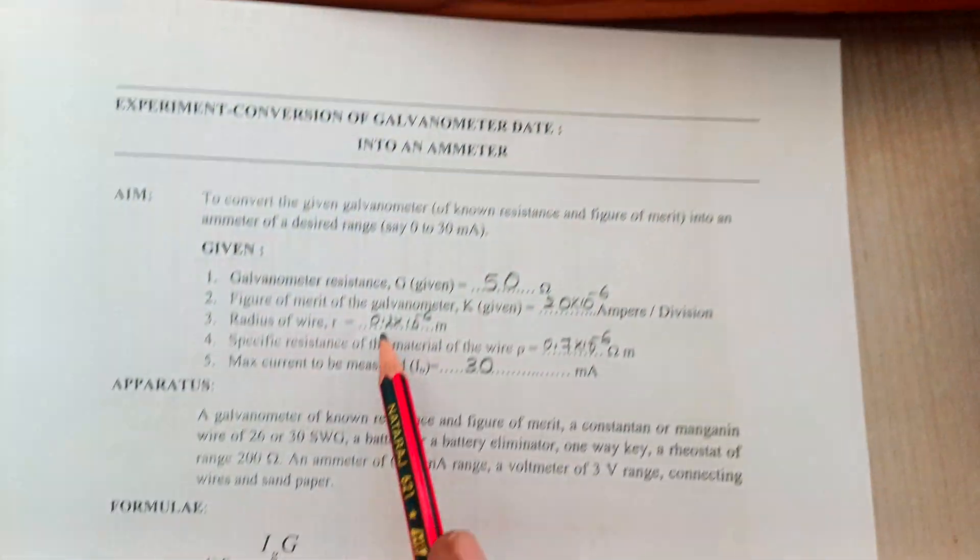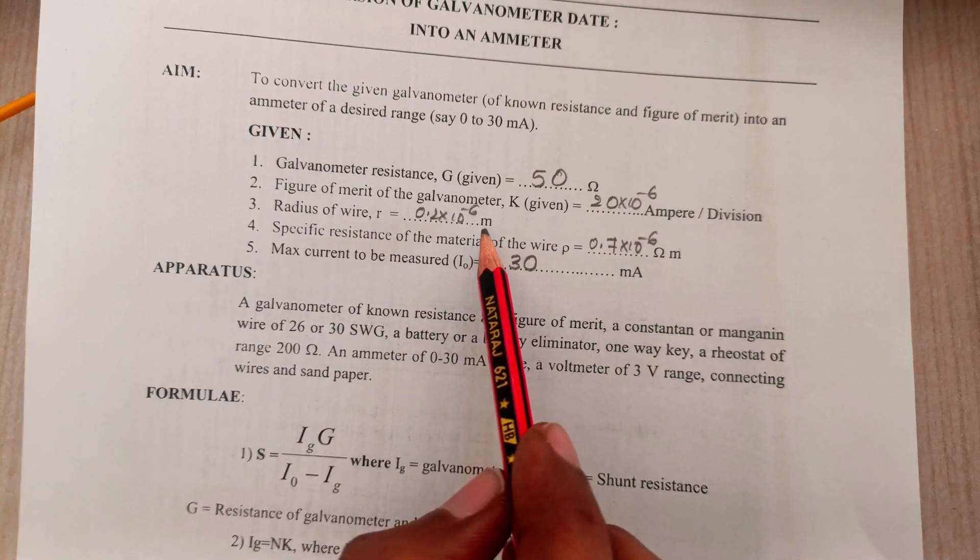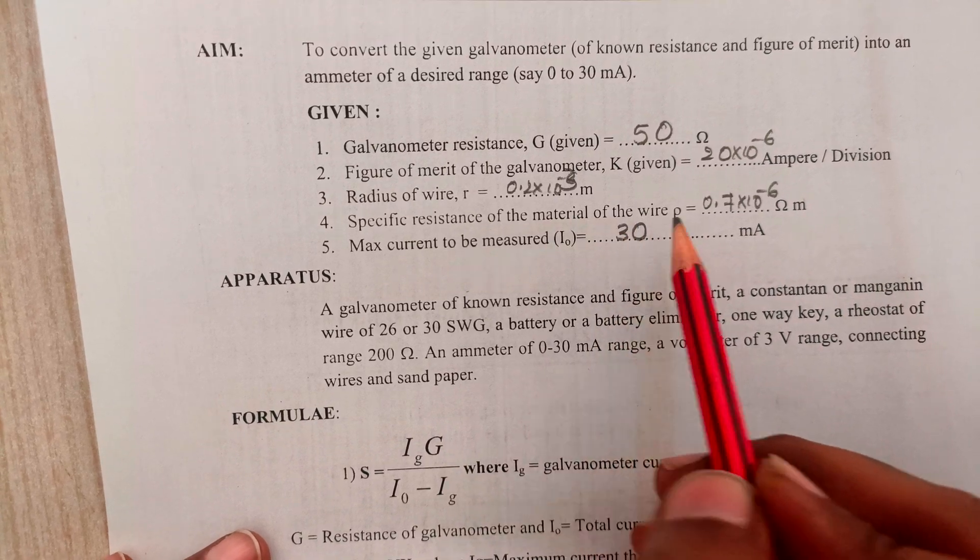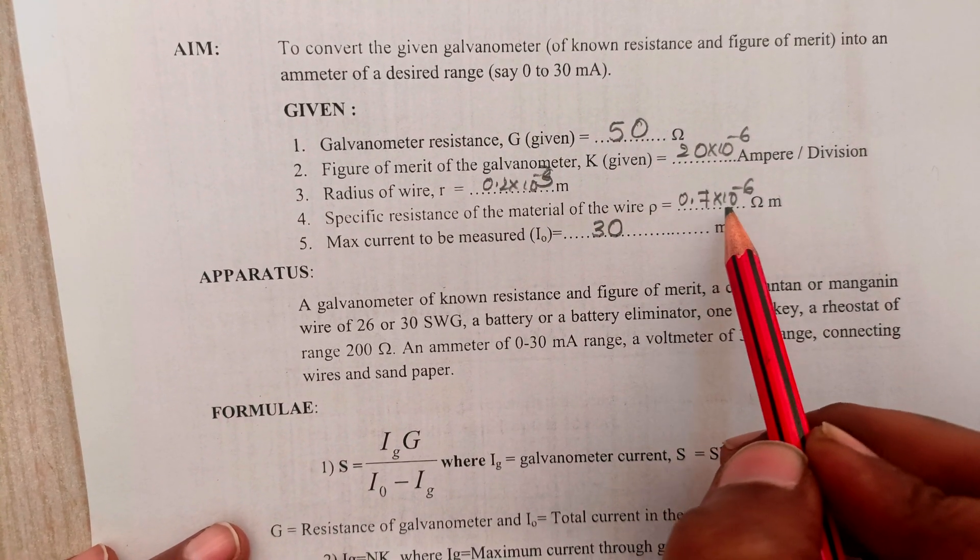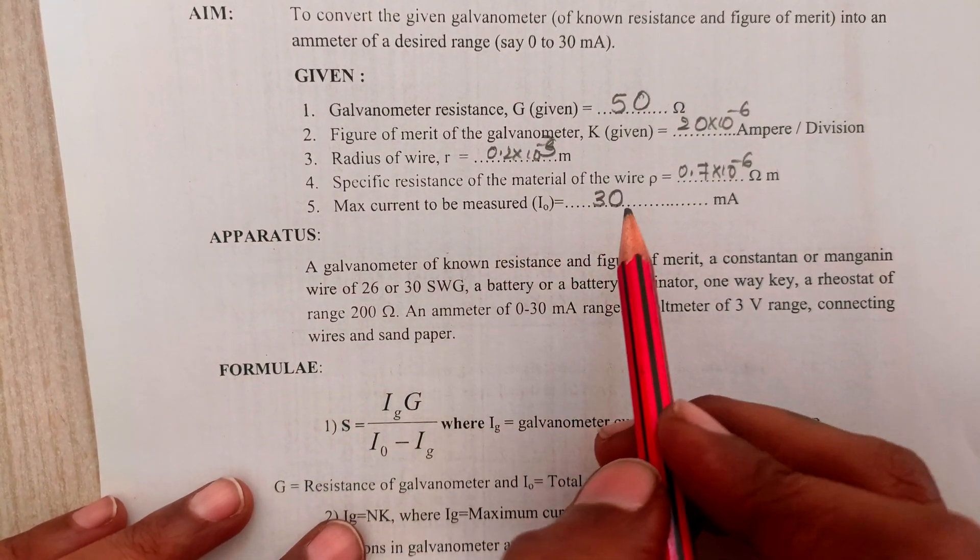Radius of the given wire is 0.2 × 10^-3 meters and the calculated specific resistance of the material of the wire rho is 0.7 × 10^-6 ohm meter. The maximum current to be measured is 30 milliamps.